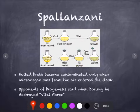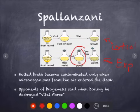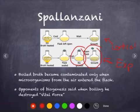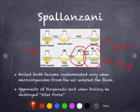Next is the Italian Spallanzani. He boiled broth in a flask. In his control, he boiled the broth and let microorganisms grow. In his experimental group, he closed the flask and showed that no growth appeared. When he removed the seal, growth returned. The broth became contaminated only when microorganisms from the air entered. His opponents said that boiling destroyed its vital force, and that sealing it prevented that force from coming in. People were still questioning biogenesis because of that vital force.